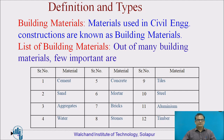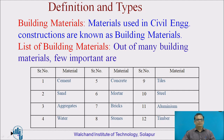Definition and types: Materials which are used in building constructions or civil engineering constructions are known as building materials. There are a number of building materials such as cement, sand, aggregates, and water — all of these make concrete. Concrete is one more material formed from these. Then mortar, bricks, stones, tiles, steel, aluminium, timber, and so on. Let us discuss a few of these today in detail.